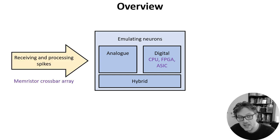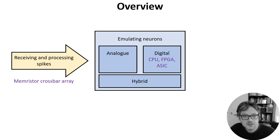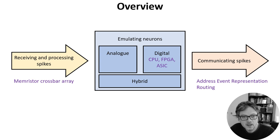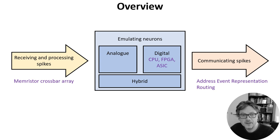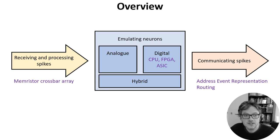This hardware has to have a way of processing a potentially very large number of incoming spikes. A common approach is the memristor crossbar array, which I'll talk about later. There also needs to be a way for a neuron to communicate its spikes to other neurons. There's a standard protocol for that — the address event representation — and a few different approaches to routing spiking events efficiently to their targets.